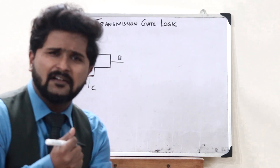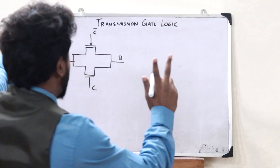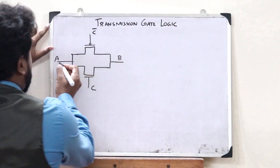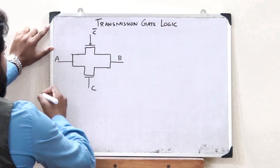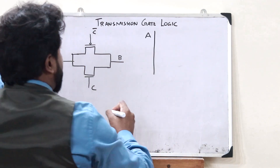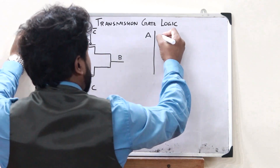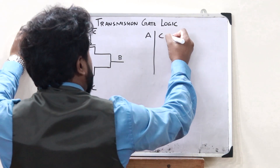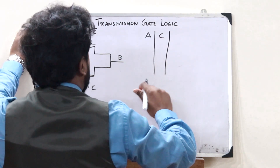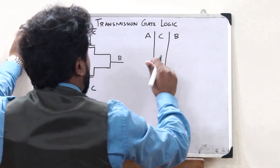How does this work? There are two inputs being given: first, the input at A, and next is the control signal C. When we give these two inputs, we get an output B. Since there are two inputs, we consider combinations: 0,0 — 0,1 — 1,0 — and 1,1.